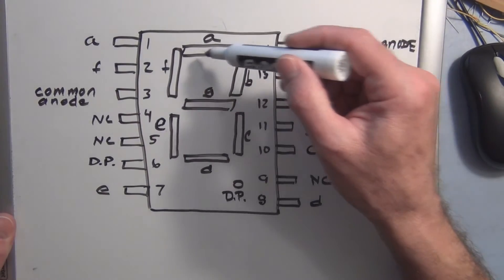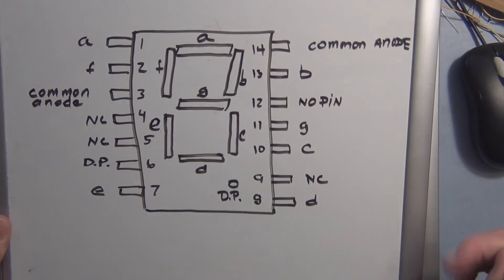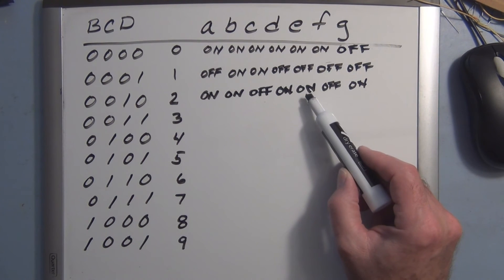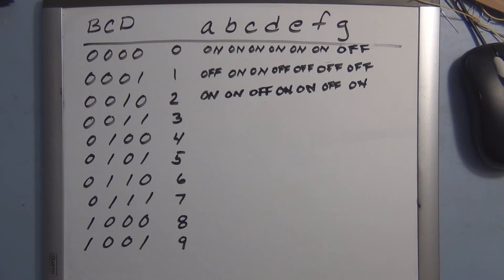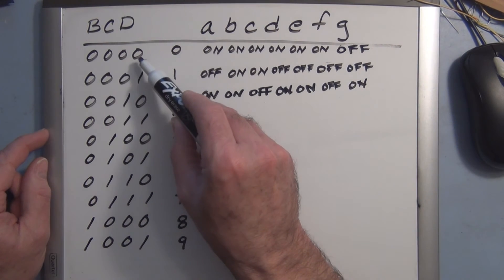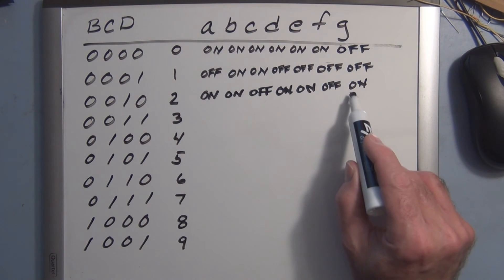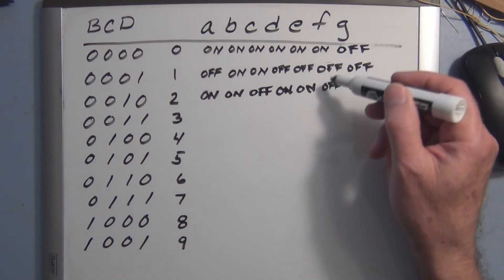So if we look here, to create a two, we have A, B, G, E, D—those would be on. So you have A, B, D, E, and G are on, and then the rest are off. So you would create this. And then there's a lot of gates, there's a lot of circuitry in that chip. So for the appropriate BCD code, they figure out what segments need to be lit to produce that decimal, and that's what's on that chip.